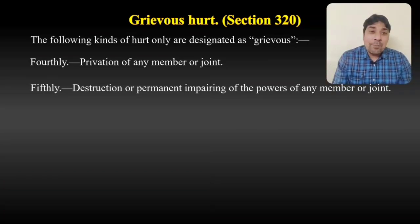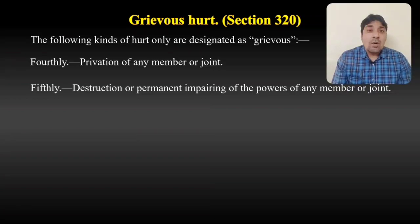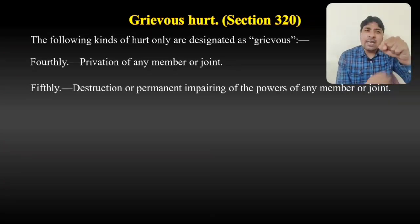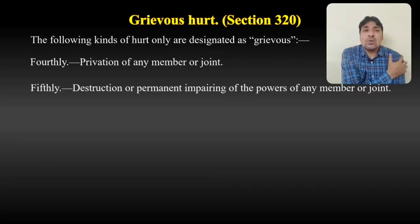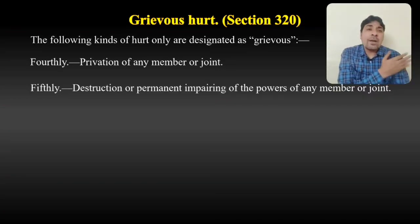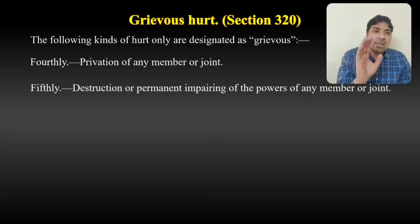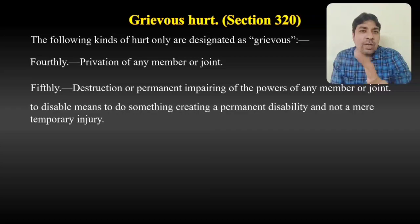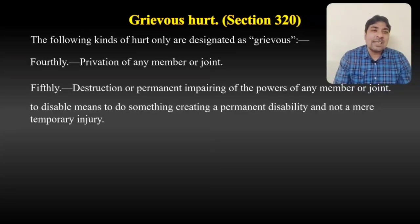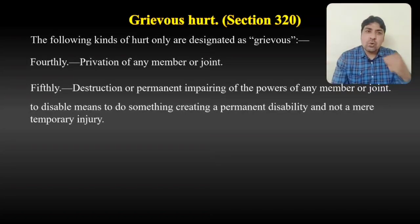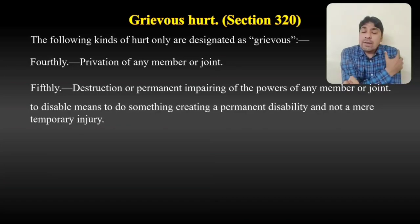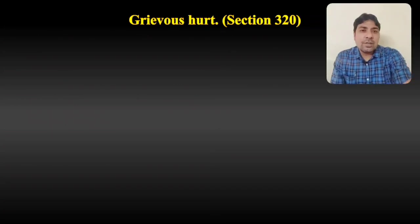The fifth type is destruction or permanent impairing of the power of any member or joint. If I punch someone's shoulder in such a way that the shoulder's capacity — for example, to lift things — is permanently destroyed due to the injury, then that person will also be liable for grievous hurt. The impairment must be permanent. To disable means to create a permanent disability and not merely a temporary injury. A temporary injury falls under hurt, but a permanent injury falls under grievous hurt.